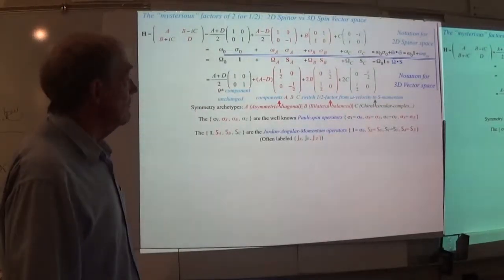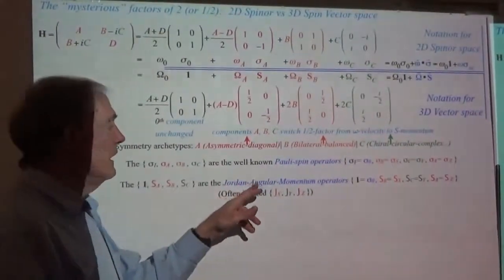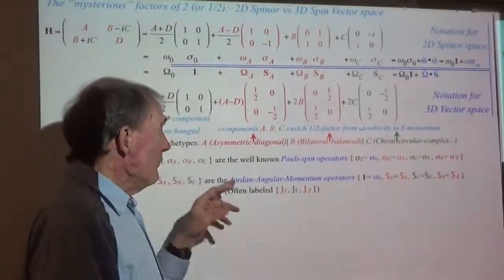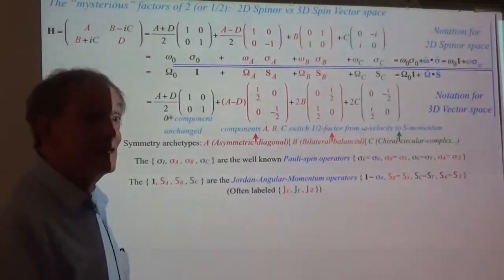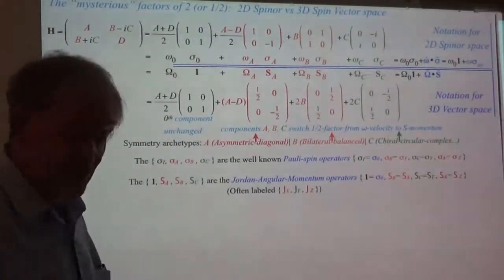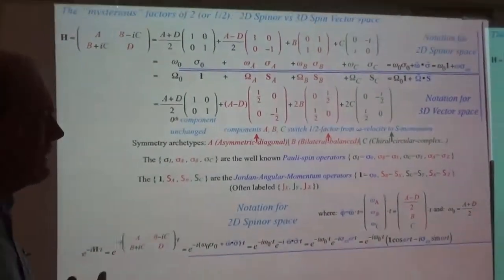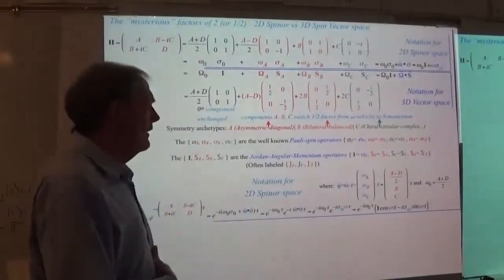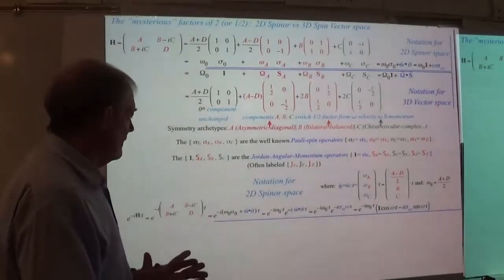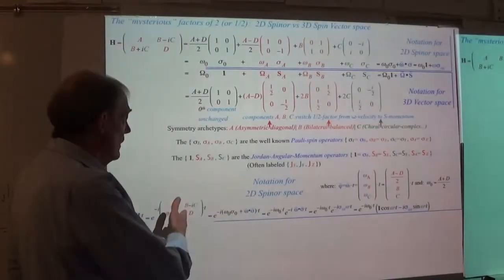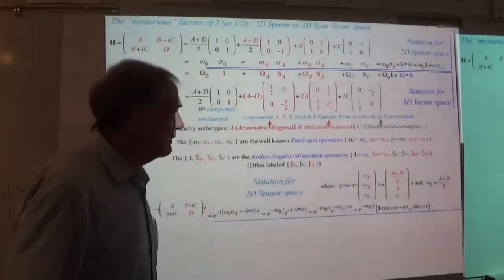These big S's are the Jordan angular momentum operators, often labeled because of Jordan's J as Jx, Jy, and Jz. This is all stuff happening in the early 1900s and people were really surprised — they'd gotten used to quantum mechanics from Planck, but they didn't get used to having a half of the stuff. Just about everything is made out of stuff that's only half a quantum.